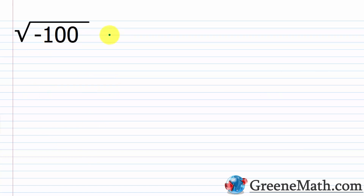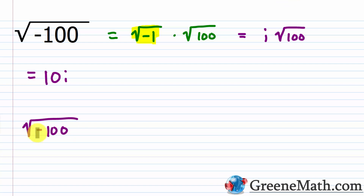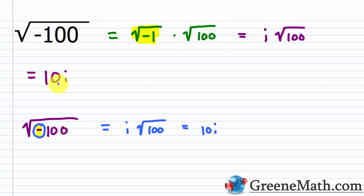Let's start with the square root of negative 100. The long way is to break it up using the product rule: the square root of negative 1 times the square root of 100. Since the square root of negative 1 is i, we replace that with i, giving i times the square root of 100. The principal square root of 100 is 10, so this is i times 10, or 10i. To speed this up: anytime you see a negative under a square root, pull that part out as i and write i times the square root of the remaining number. You don't need to go through the long process each time.